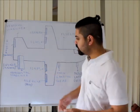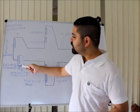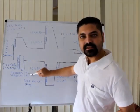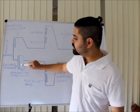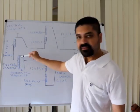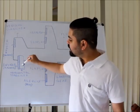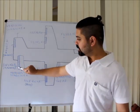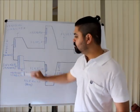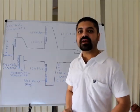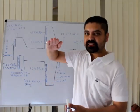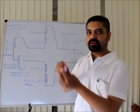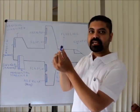Next we have the horizontal stabilizer, which is located under the vertical stabilizer. The movable part within it is called the elevator. The elevator produces a movement called pitching — the nose-up or nose-down movement that occurs during takeoff and landing.